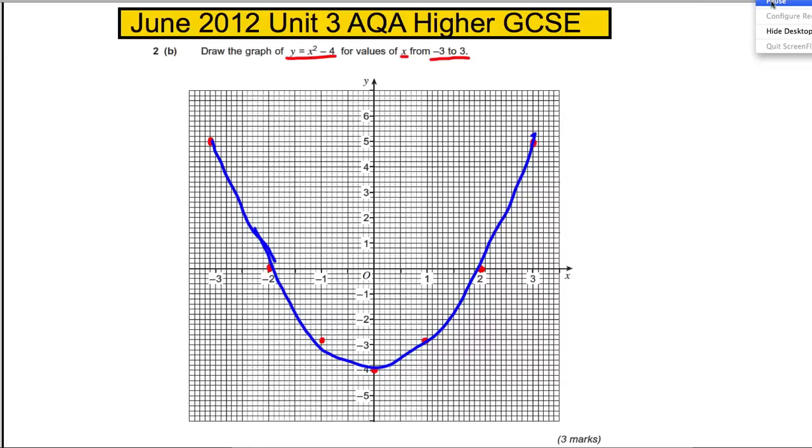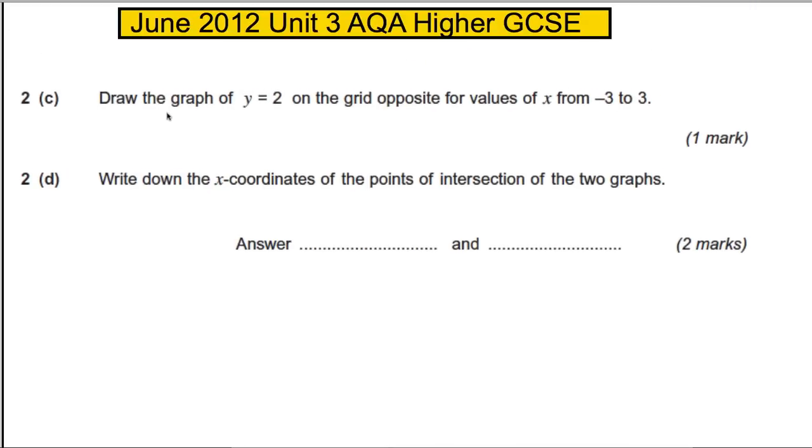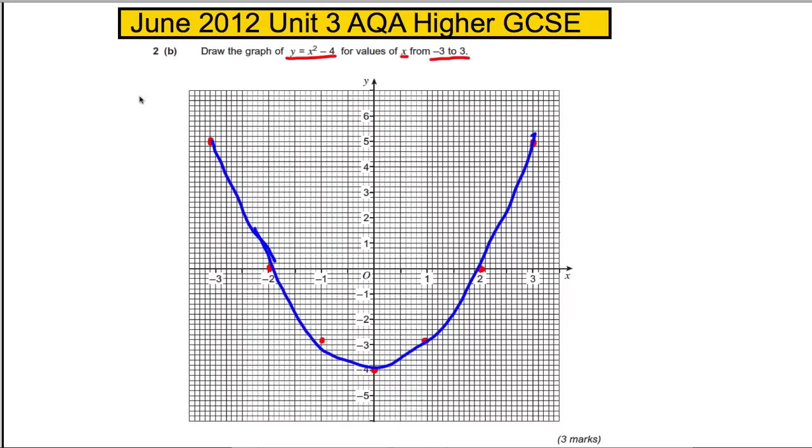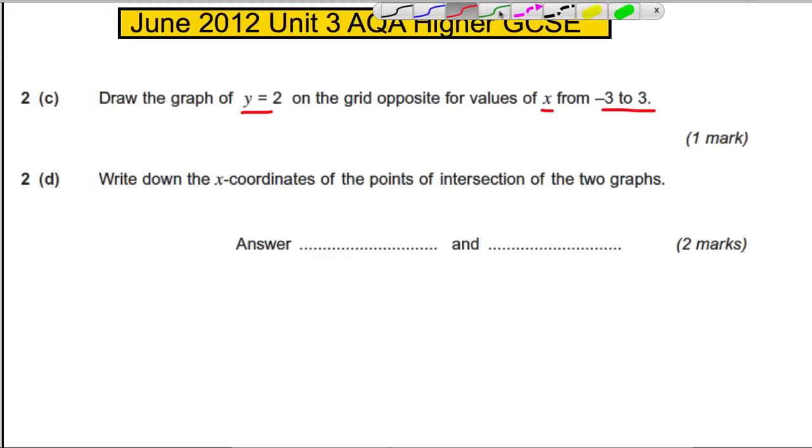Next part C says draw the graph of the line y equals 2 on the grid opposite for values of x from negative 3 to 3. So we're going to draw the line y equals 2. The line y equals 2, we should know this is where the y value is always equal to 2, it's there. Now it says draw it from x is negative 3 to 3, so just make sure you've restricted it and drawn it the way they want it, and there we go there's our one easy mark.